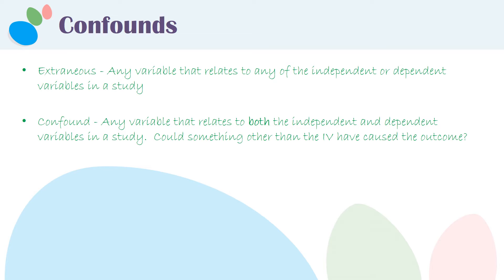A confound is when you can say maybe something other than the independent variable is what caused the effect on the dependent variable. There are two ways to think about confounds: one is, could this variable be an alternative explanation for the findings? And another is, does this variable relate to both the independent and the dependent variable?